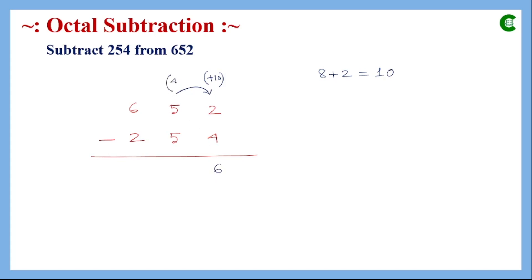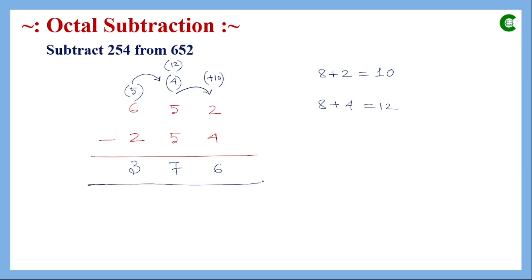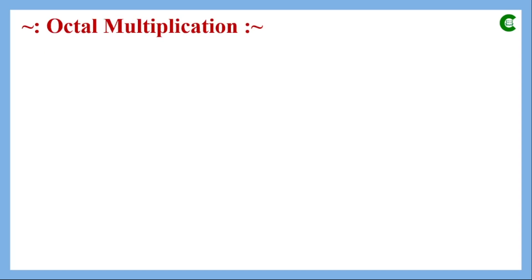Since we borrowed 8, the 5 in the next position becomes 4. Now 5 is subtracted from 4, but 4 is less than 5, so we borrow again: 8 + 4 = 12. Subtracting 5 from 12 gives 7. The 6 in the most significant position becomes 5 after borrowing, and 2 subtracted from 5 gives 3. The final result is 376.